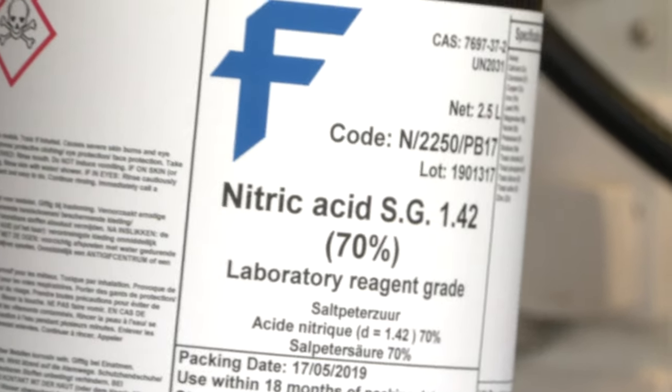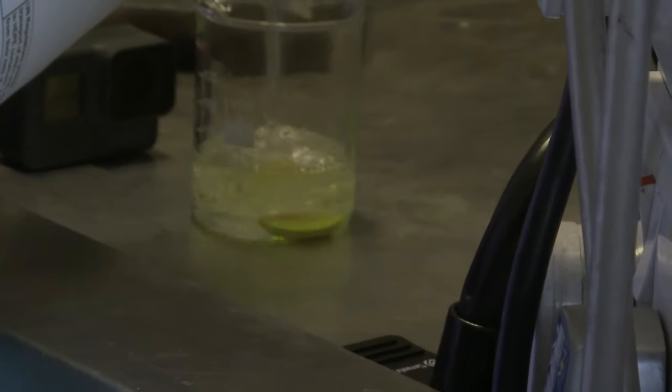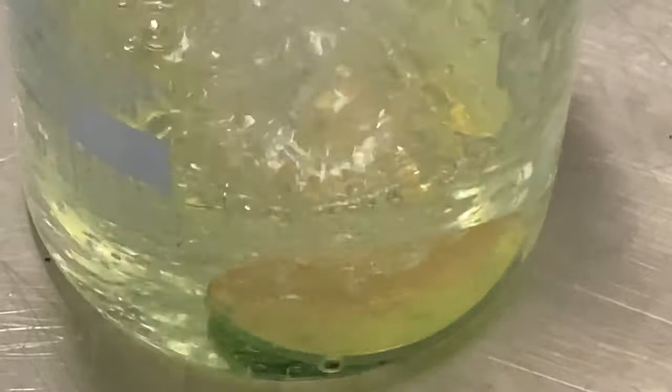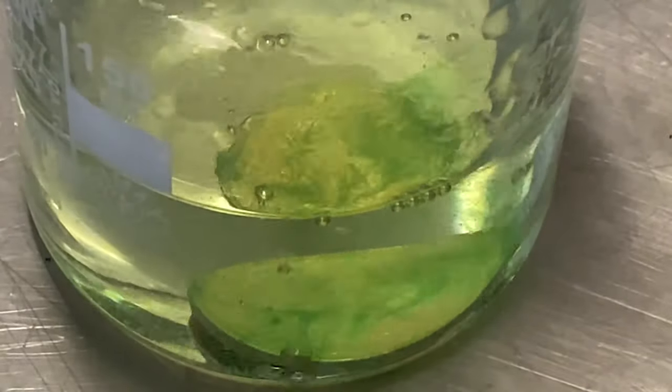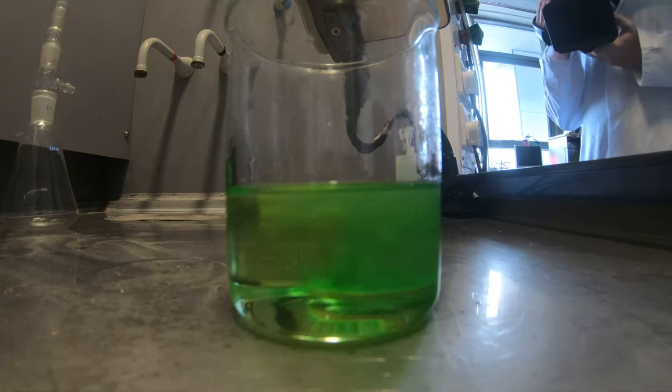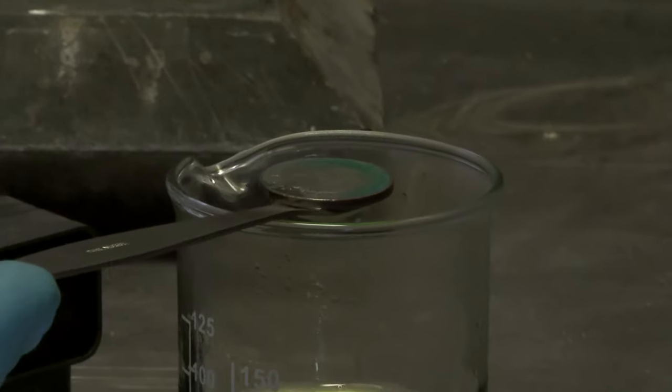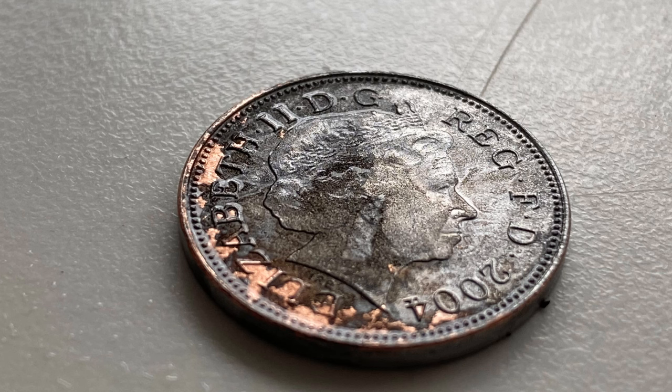Neil decided to do it again, and he repeated the experiment. The reaction happened. And this time, the coin came out just as we expected. Copper was gone, but the iron and the picture of the Queen was there.